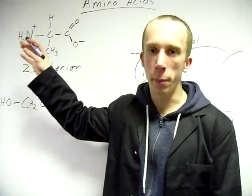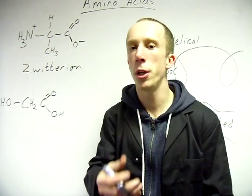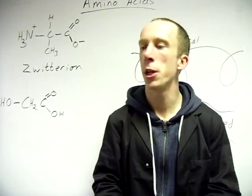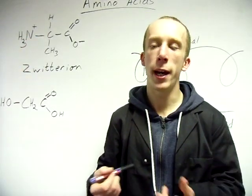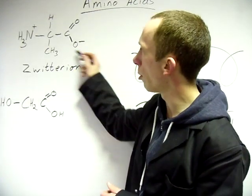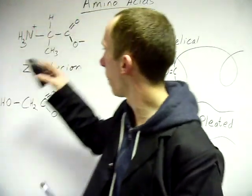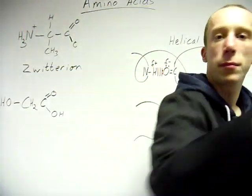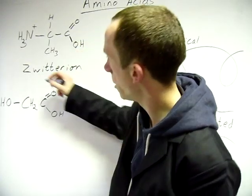Now depending on the pH of your solution, then it will look a bit different because if you've got a highly acidic solution, i.e. lots of hydrogen ions floating about, then obviously this basic end is going to pick up a hydrogen ion. But across here as well, a hydrogen ion could now stick onto our O-.